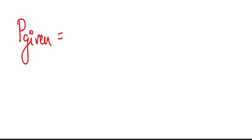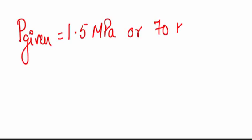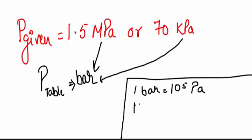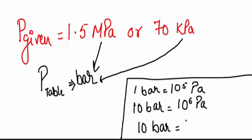Remember that sometimes in numerical problems pressure is given in megapascal or kilopascal, and if in your steam table the unit of pressure is in bar, you have to convert it. We know one bar is equal to 10 to the power 5 pascal, or 10 bar equal to 10 to the power 6 pascal which is equal to 1 megapascal.